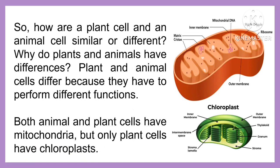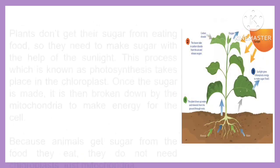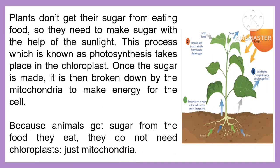Both animal and plant cells have mitochondria, but only plant cells have chloroplasts. Plants don't get their sugar from eating food, so they need to make sugar with the help of sunlight. This process, known as photosynthesis, takes place in the chloroplast. Once the sugar is made, it is broken down by the mitochondria to make energy for the cell. Because animals get sugar from the food they eat, they do not need chloroplasts — just mitochondria.